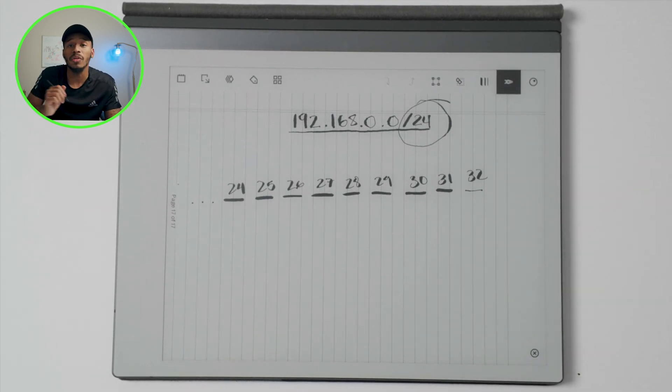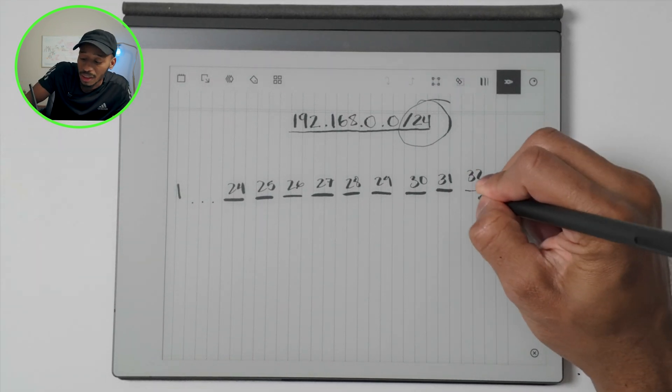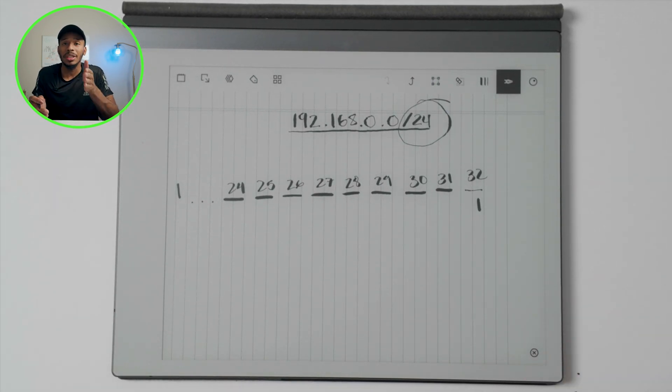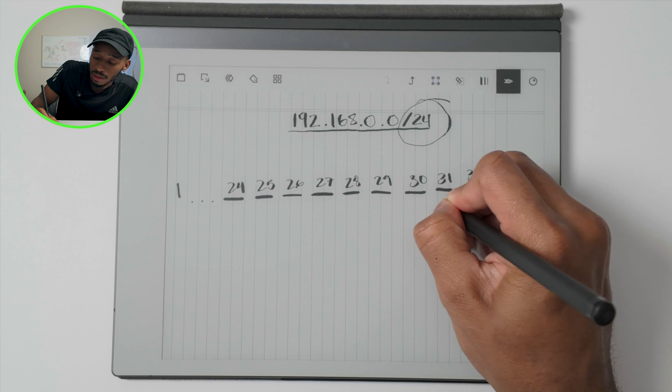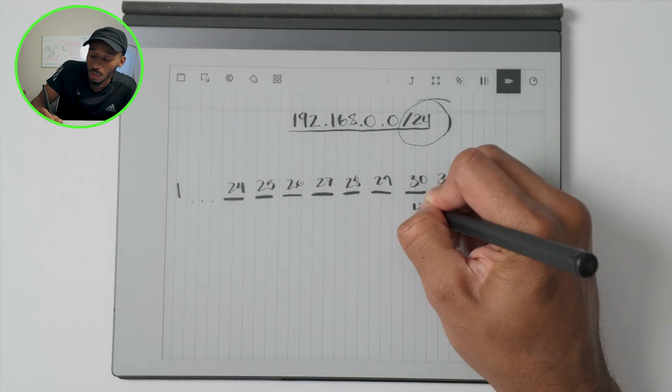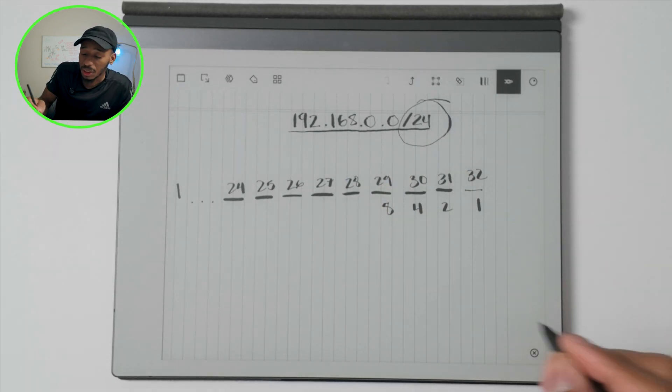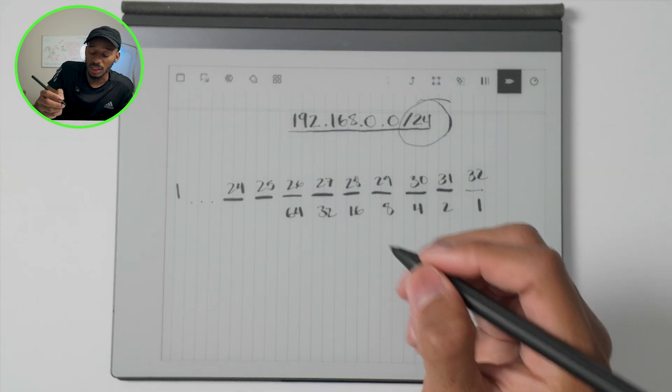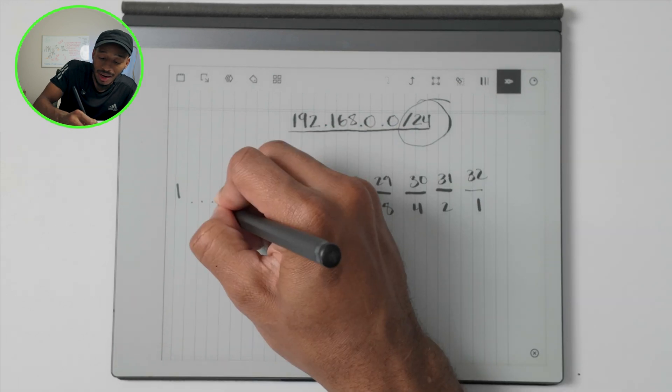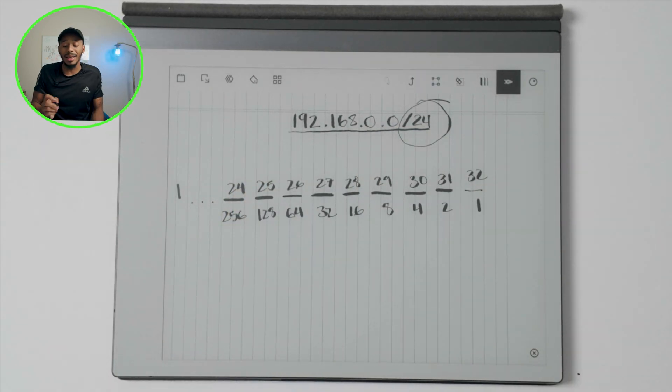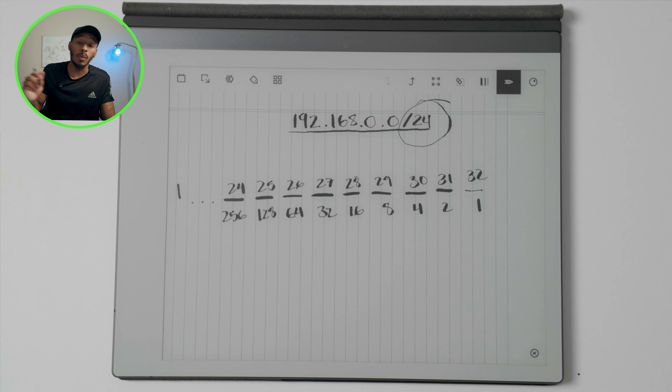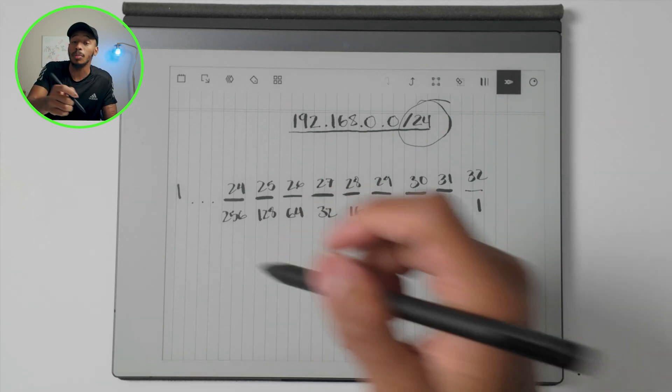And so the first value here for a slash 32 network is going to be one. And as we move to the left, you'll just keep doubling that number. In this case, this will be two. The next one will be four for 29. It'll be eight, double eight, that's going to be 16. Next is 32 and we get to 64 and we get to 128 and now we're at 256, but we haven't yet identified the total number of host addresses. This is just the total number of network addresses that are available for that subnet.